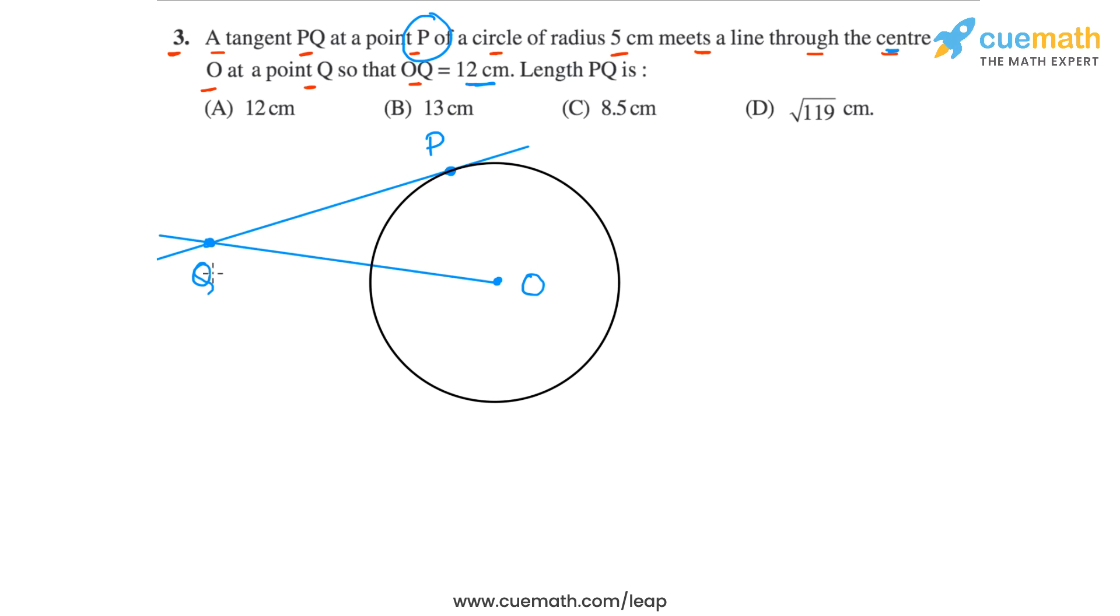So we are told that OQ is 12 centimeters. So this length OQ is 12 centimeters. And we have to find now the length of PQ. So we have to find this length, the length of the tangent.